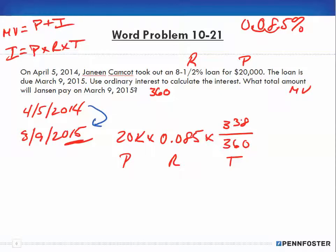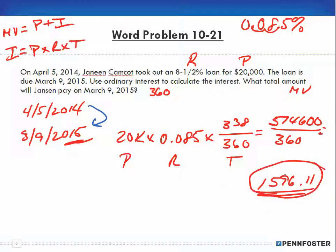I now put the 338 days into the numerator and it's basically just doing all of the math like we did before. So $20,000 times 0.085 times 338 gives me $574,600, and that's all over 360 days. When we divide that $574,600 by 360, we end up with $1,596.11. So that's my interest.